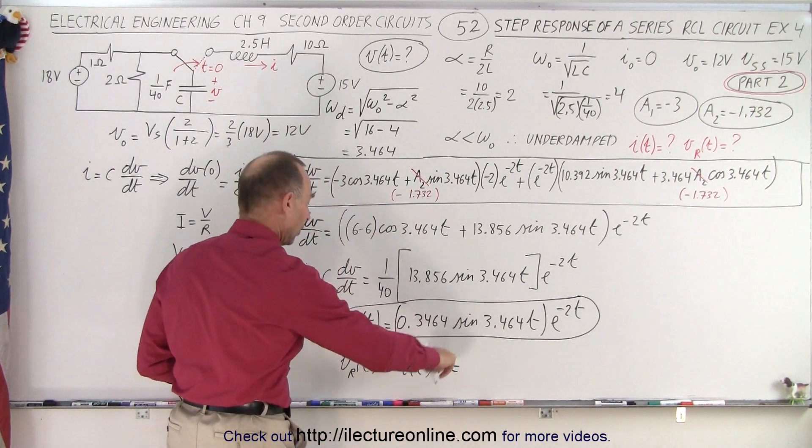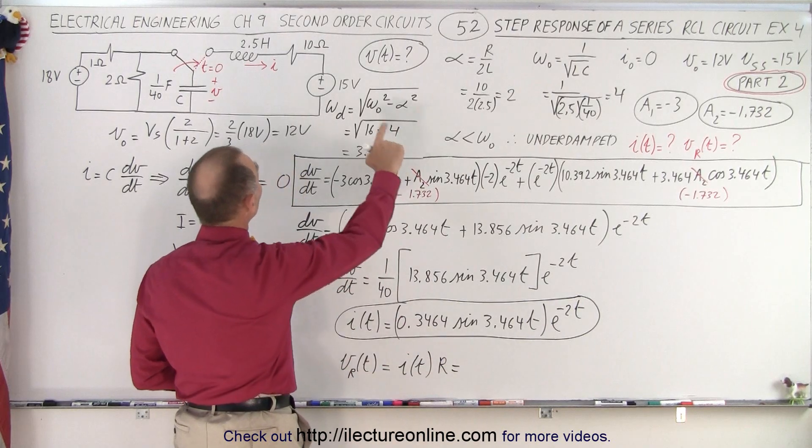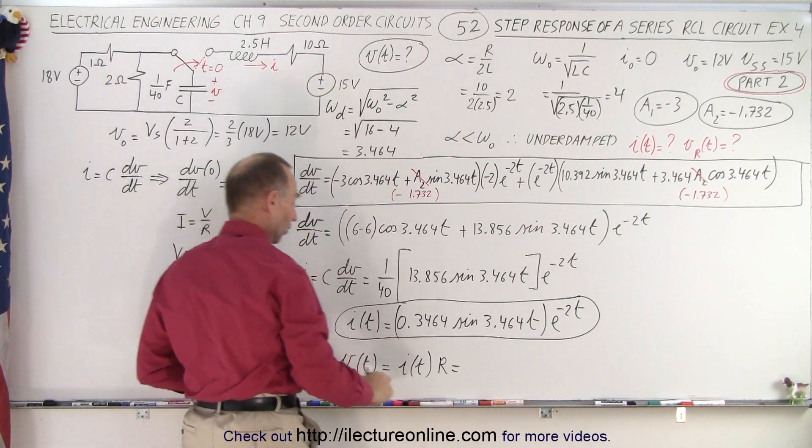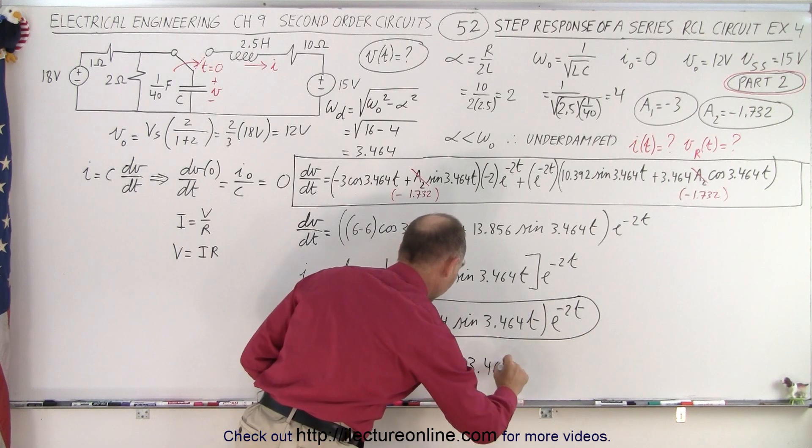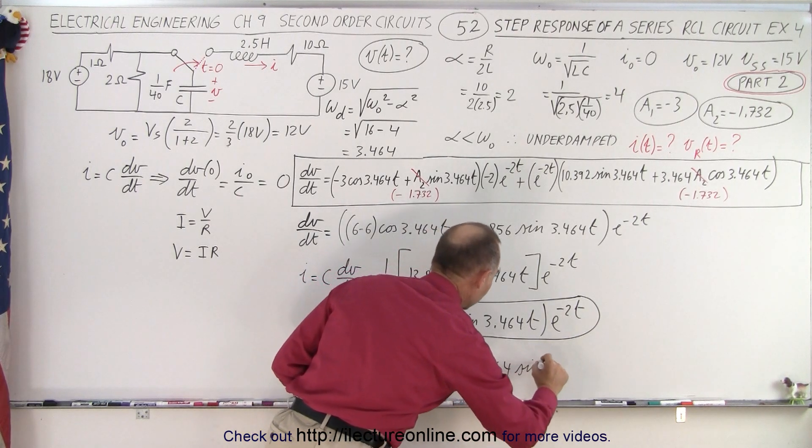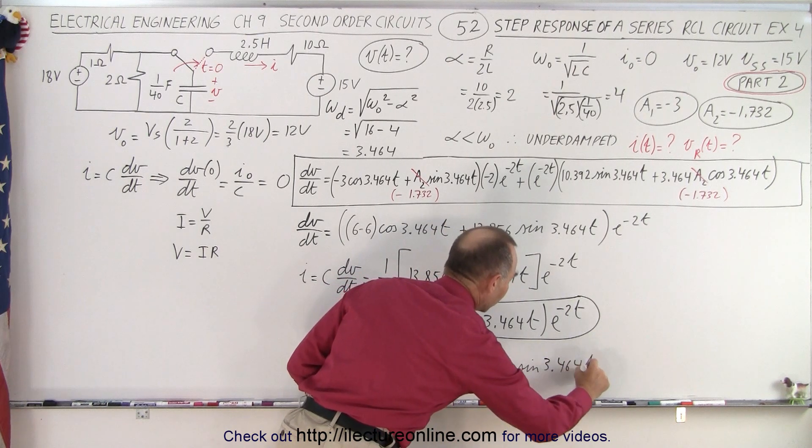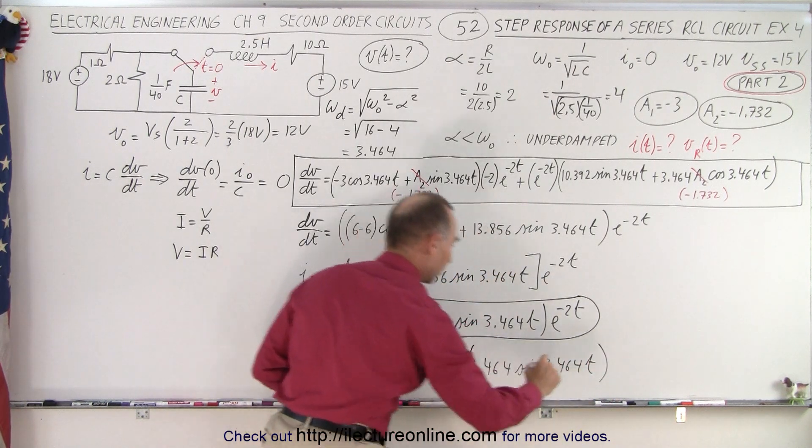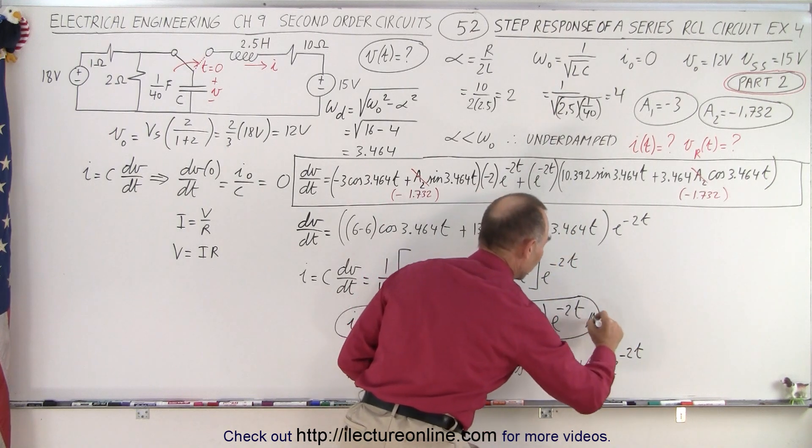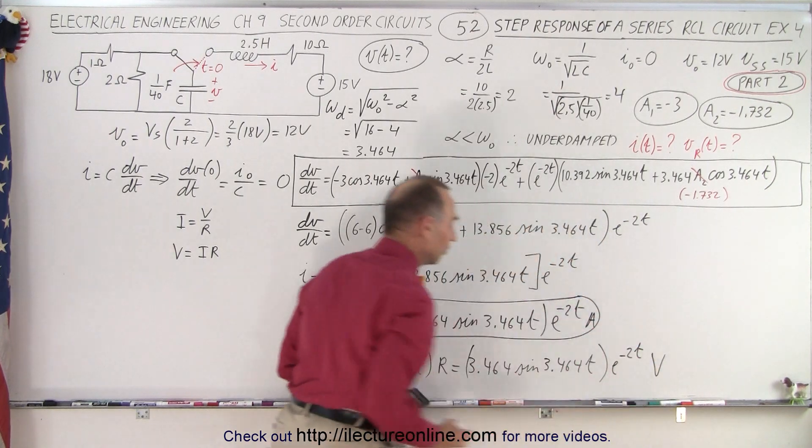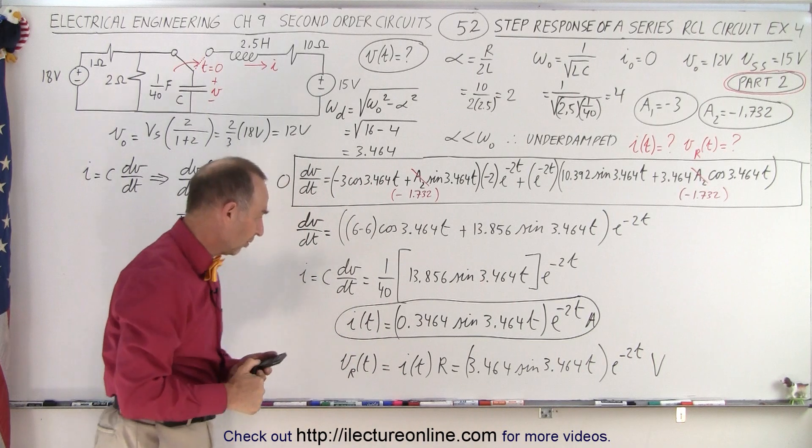So in this case, that's this equation times the resistance, which is 10 ohms. So that's 10 times this. This becomes 3.464 times the sine of 3.464t, and the whole thing multiplied times e to the minus 2t. And of course, this is in terms of amps, and this is in terms of volts, to keep them straight.